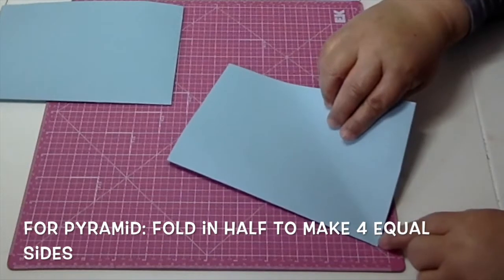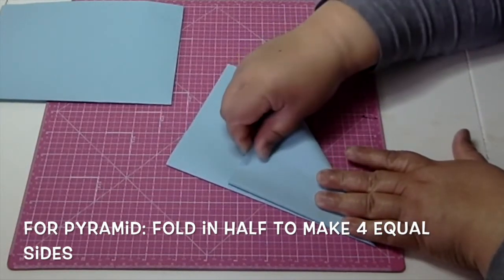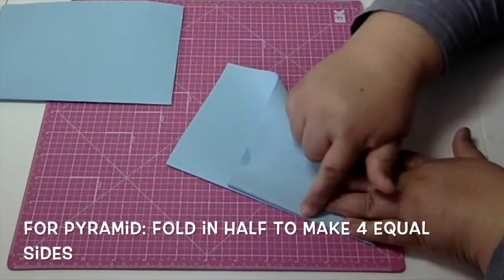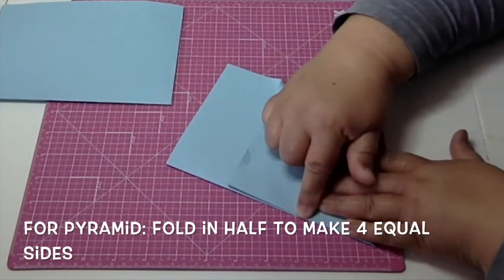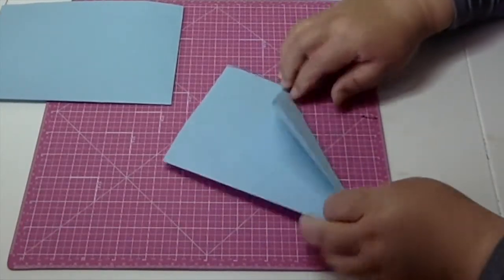Now, just for my pyramid, I'll fold it in half to make the four equal sides. I'm just meeting the two sides together here, flatten it out. Now I've got my four equal sides for my pyramid.